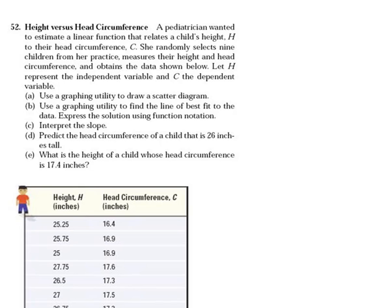It says let h represent the independent variable and c the dependent variable. Okay well if we're doing that, well normally we think about independent as x and dependent as y. So this is what's going to tell us that our height is going to go in our list one and our head circumference is going to go in our list two.